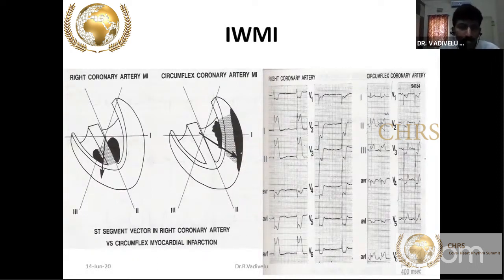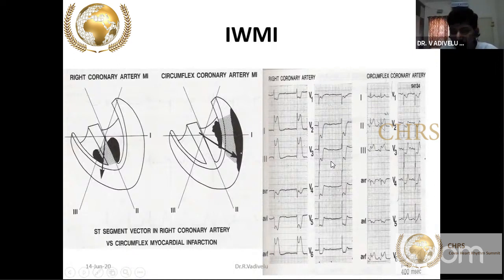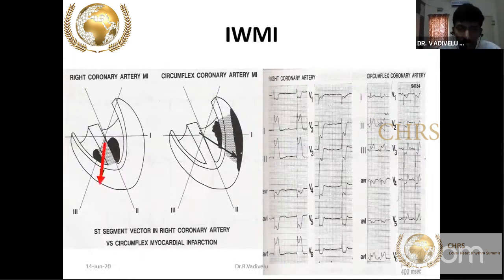Inferior MI can be due to right coronary artery or left circumflex occlusion. The left circumflex axis is directed toward lead 2, while lead 3 is oriented toward the right side. With RCA occlusion, lead 3 shows more ST elevation than lead 2, and ST depression is seen in lead 1 and AVL — AVL ST depression is greater. With left circumflex occlusion, ST elevation in lead 2 is greater than lead 3, and leads 1 and AVL may be isoelectric or even show ST elevation.